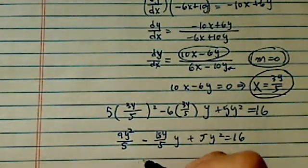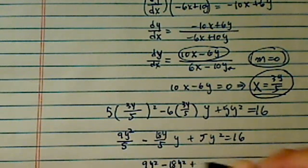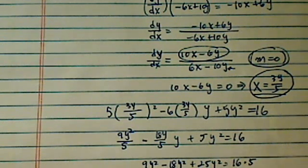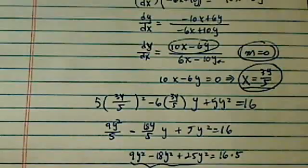So I'm going to multiply by 5 everything. So I have 9y squared minus 18y squared plus 25y squared, equal to 16 times 5. What do I have on this side? I have a 16, I believe. 16y squared is equal to 16 times 5.